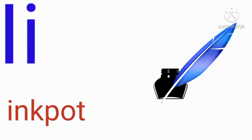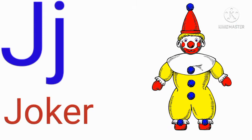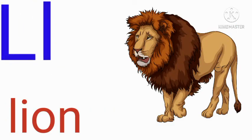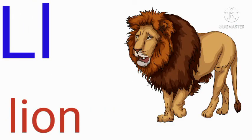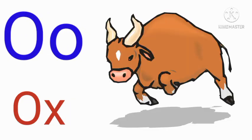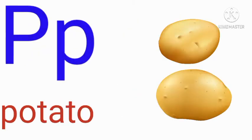I for import, J for joker, K for kangaroo, L for lion, M for mango, N for nest, O for ox, P for potato.